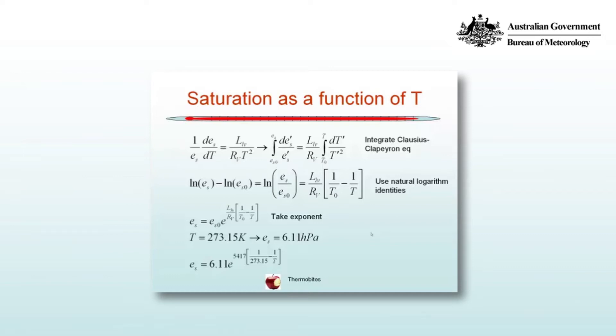The integral of the left hand side is a natural logarithm, log of ES minus log of ES0, which may be rewritten as log of ES over ES0. On the right hand side we have minus one on T, and we get rid of the minus sign by flipping the terminals of integration. That's written as L_LV over Rv times (1/T0 minus 1/T). Taking the natural exponent of both sides, you end up with that exponential expression shown.